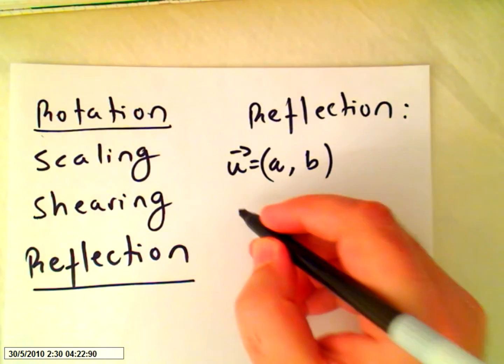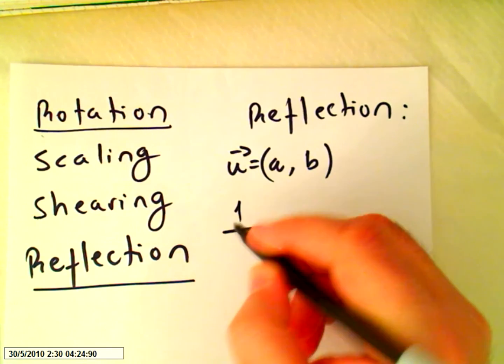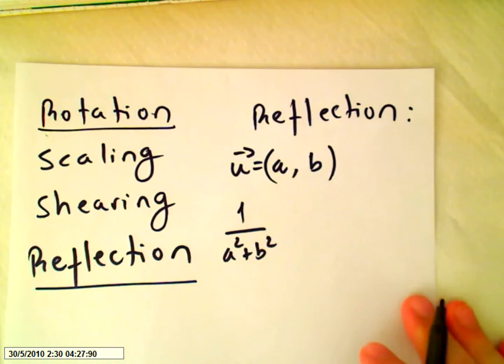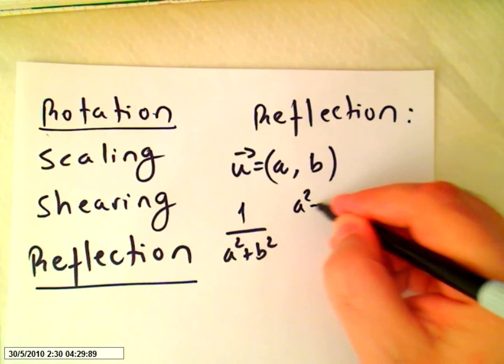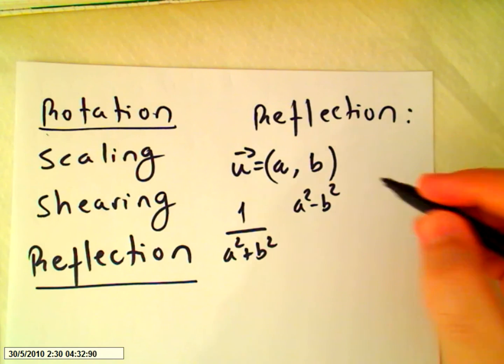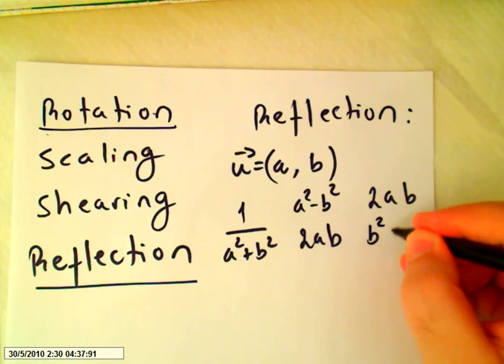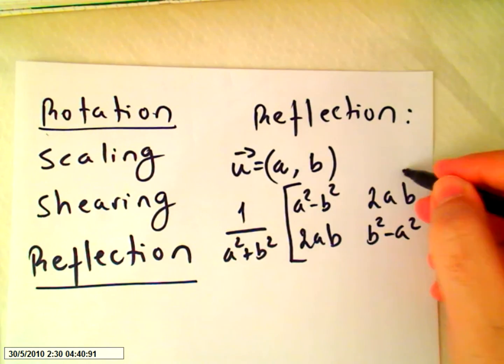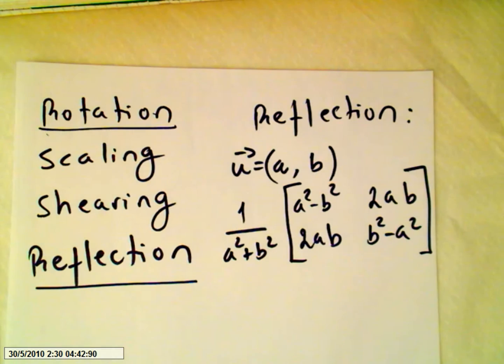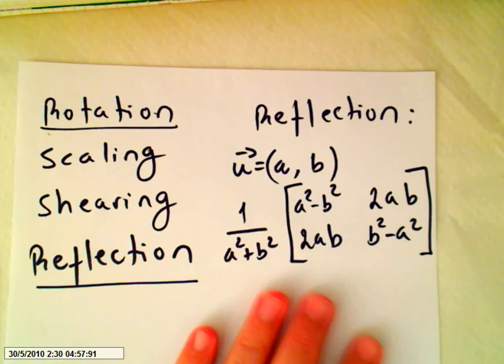So the reflection matrix is 1 over a squared plus b squared, times the matrix: [a squared minus b squared, 2ab; 2ab, b squared minus a squared]. This is to reflect a vector about a line. This is the matrix of the transformation.